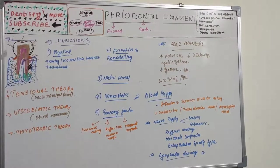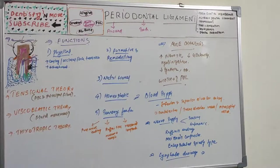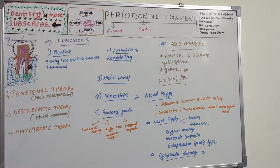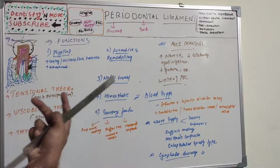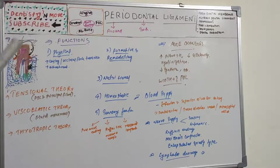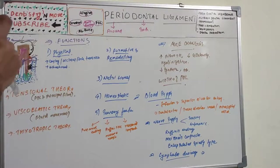Age changes in the periodontal ligament include: increase in collagen fibrosis and decrease in cellularity, areas of hyalinization, sporadic mineralization of fibers, decreased number of PDL fibers, formation of multinucleated fibroblasts, decreased collagen synthesis, irregular and uneven alveolar bone surfaces, replacement of some PDL space by fat cells, and narrower PDL space in non-functioning teeth compared to functional teeth.